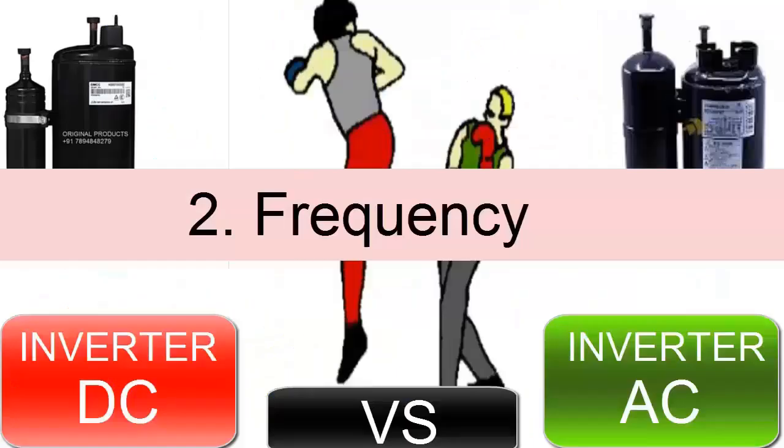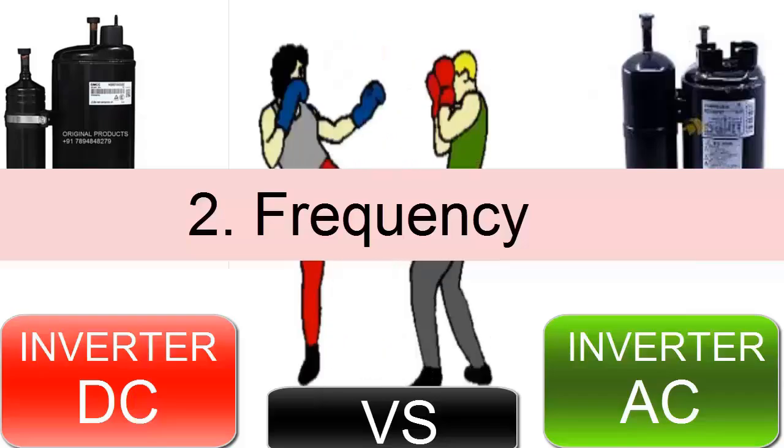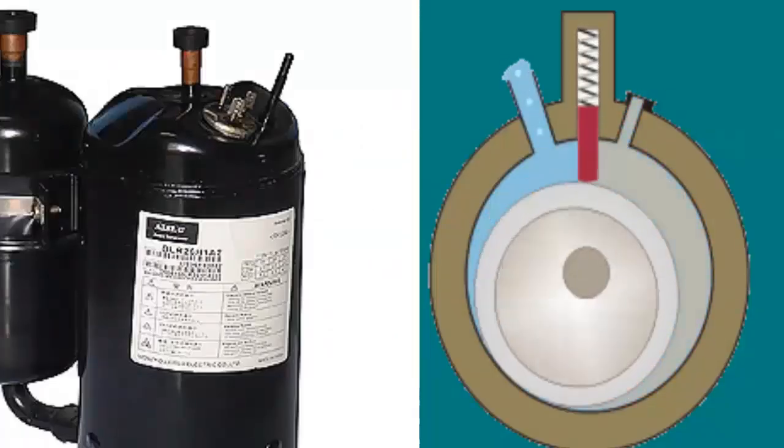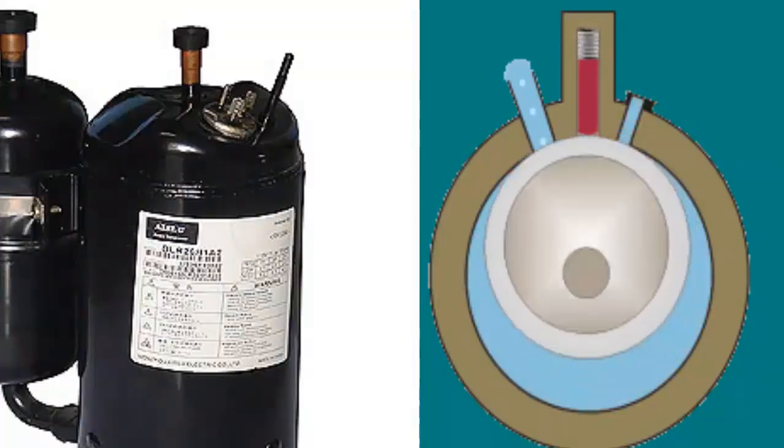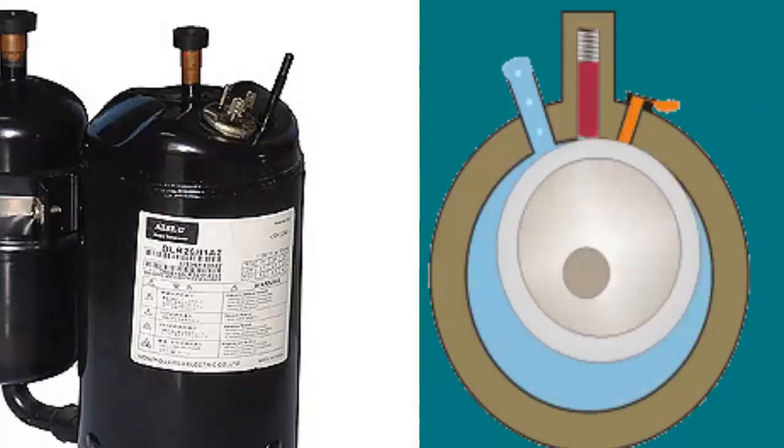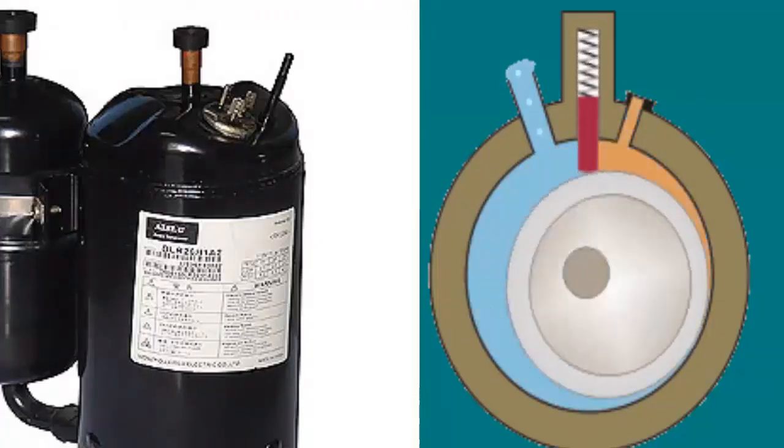2. DC compressors operate at high frequencies, generally between 60 Hz and 350 Hz. This wide frequency range allows the compressor to run at high RPMs, enabling faster cooling.